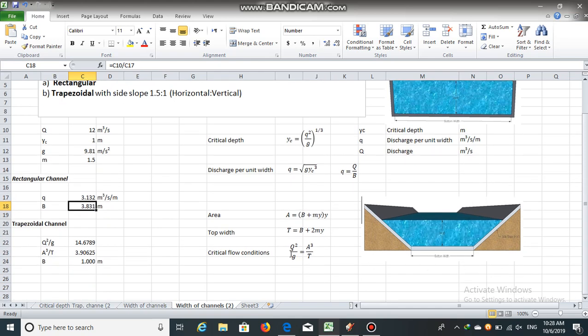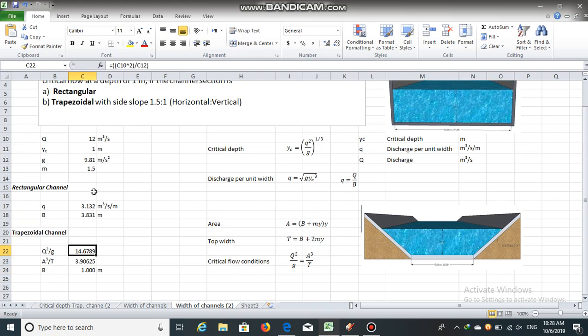We will use this critical flow condition: q square by g is equal to a cube by t. We will use solver to obtain the value of bottom width b. Q square by g can be easily obtained. Q is already given and g is 9.81, so the value of q square by g is 14.6789.